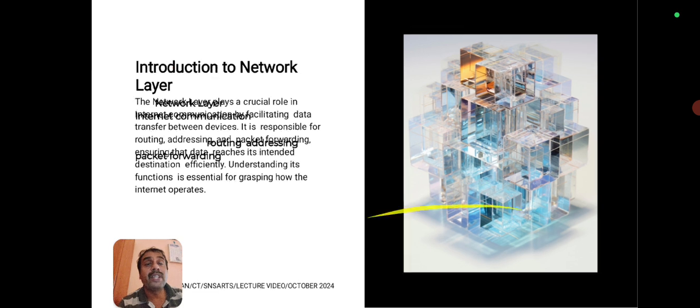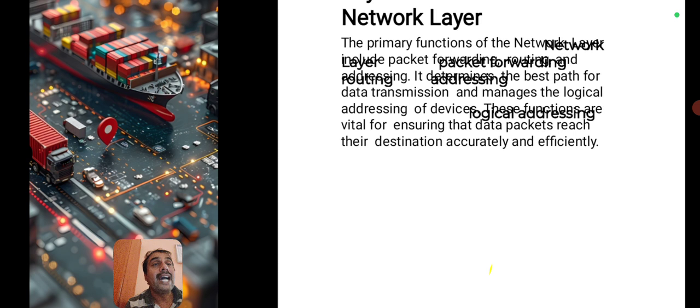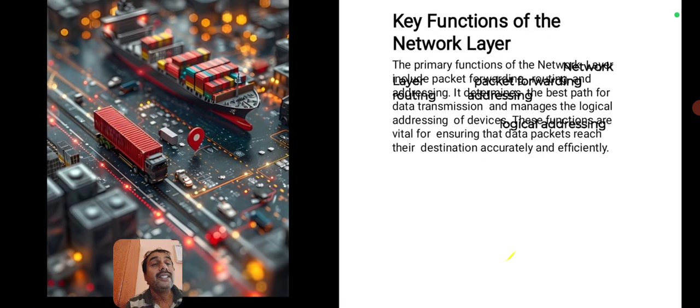The key function of the network layer is packet forwarding and addressing. It determines the best path for data transmission and manages logical addressing. Routing finds the shortest and smartest path for data to travel from source to destination. These functions are vital for ensuring that data packets reach the destination accurately and efficiently.